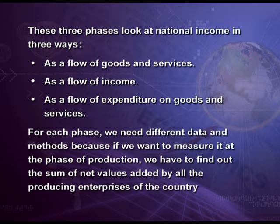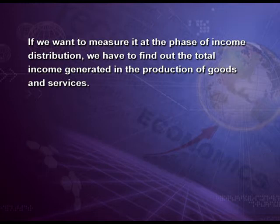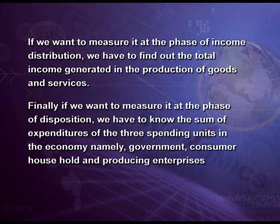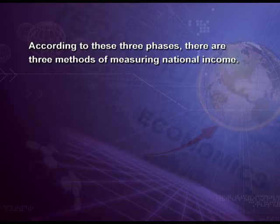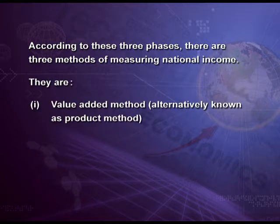For each phase, we need different data and different methods. If we want to measure it at the phase of production, we have to find out the sum of net value added by all the producing enterprises of the country. If we want to measure it at the phase of income, we have to find out the total income generated in the production of goods and services. If we want to measure it at the phase of disposition, we have to know the sum of expenditure of the three spending units: government, consumer households, and producing enterprises. According to these three phases, there are three methods of measuring national income: value added method (also known as product method), income method, and expenditure method.